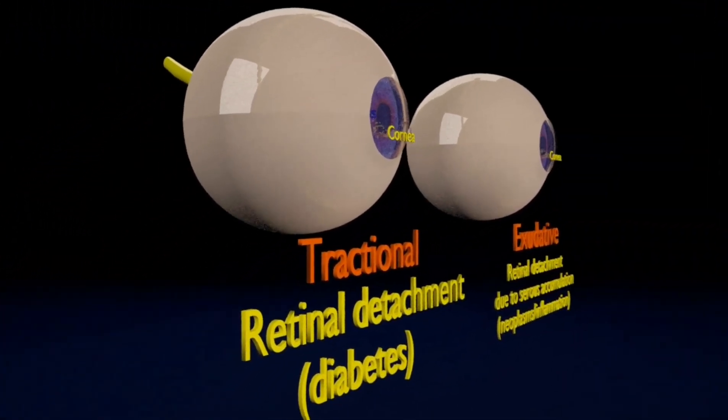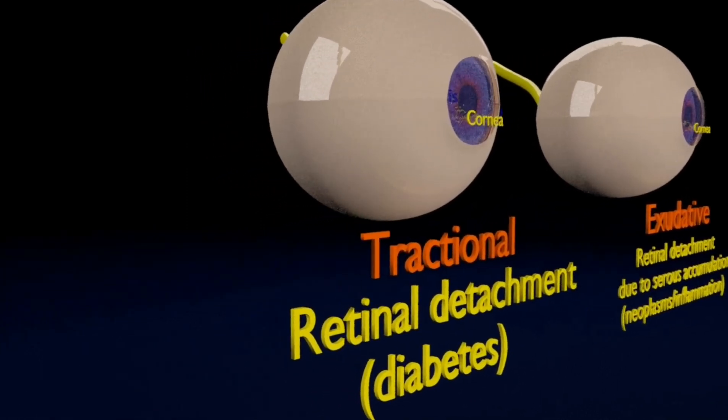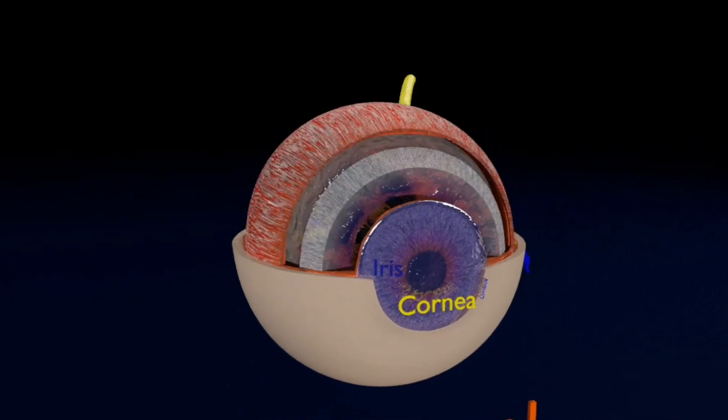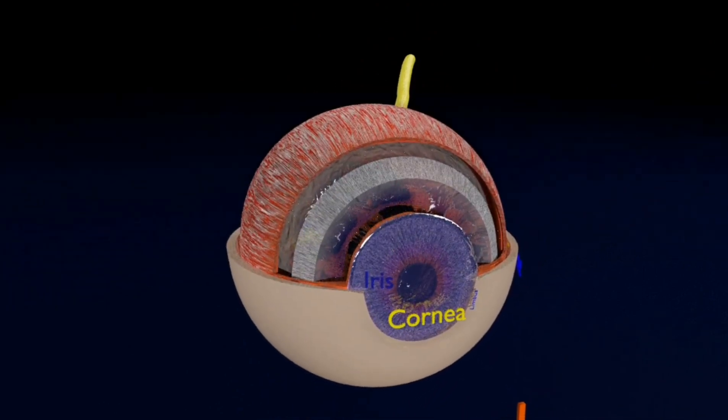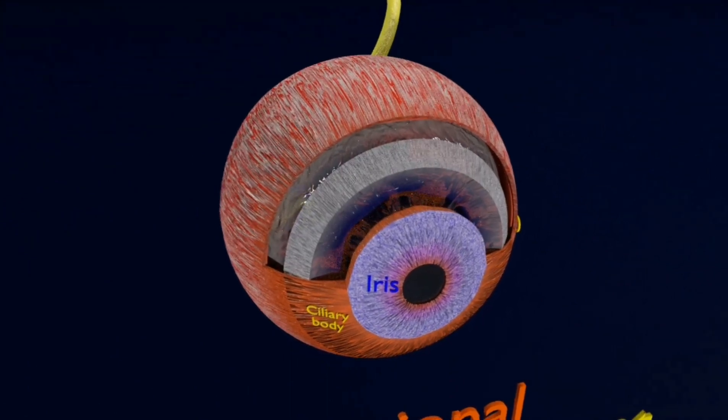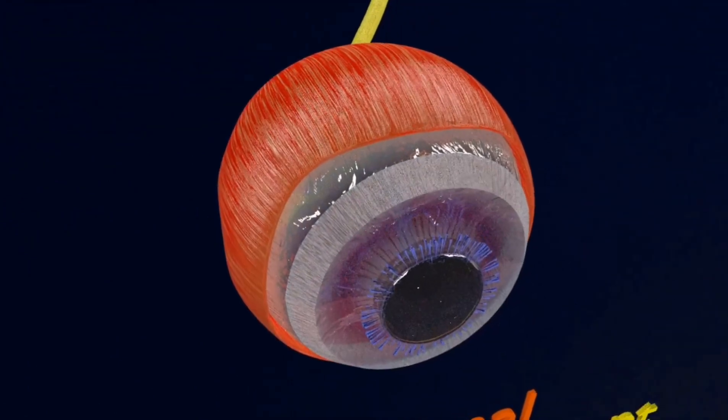Next going to the tractional retinal detachment. This type of retinal detachment is seen in case of diabetes mellitus, that is proliferation and neovascularization followed by fibrosis of the inner and outer layers of the retina causing tractional force on the retina.